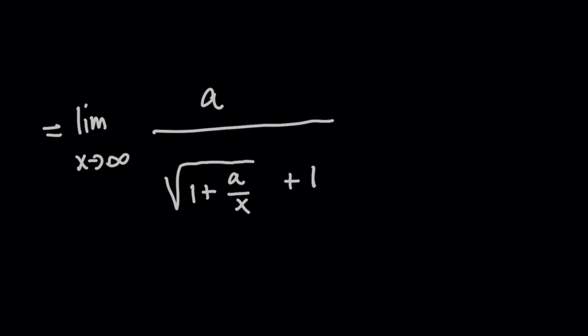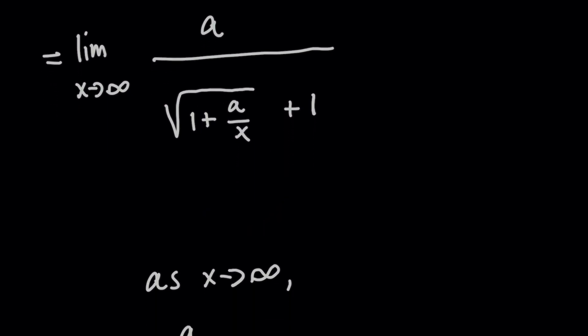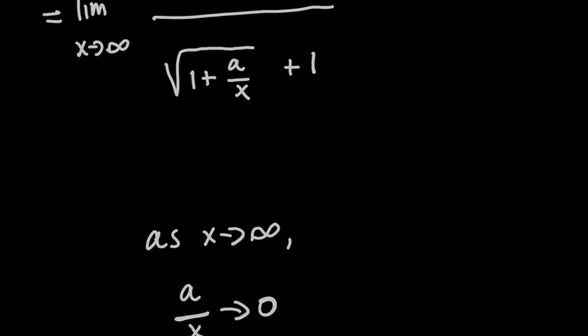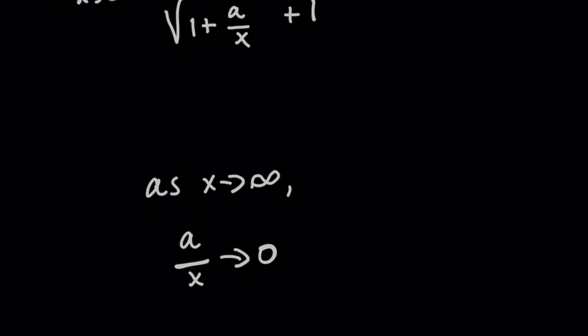Think about what a over x does when x approaches infinity. So if you don't remember, a itself is a constant. So the numerator is fixed. But because the denominator is growing without bound, when x gets super large, this fraction is really getting close to zero.